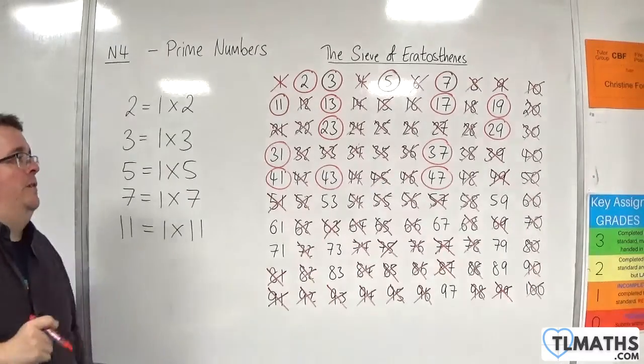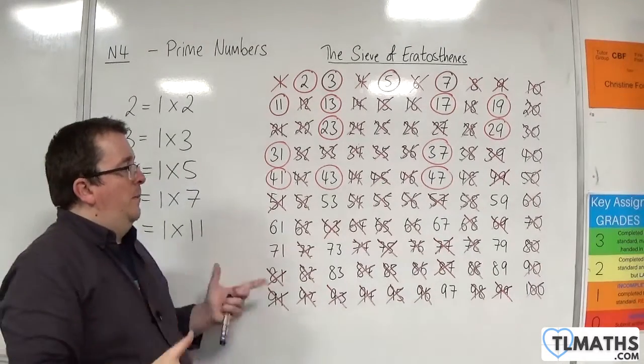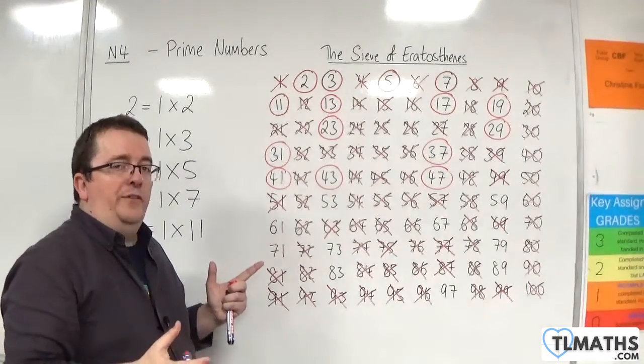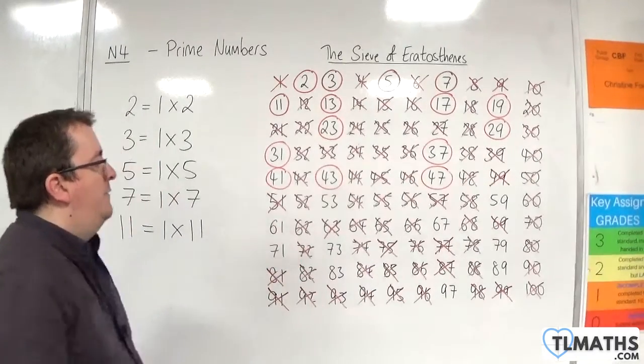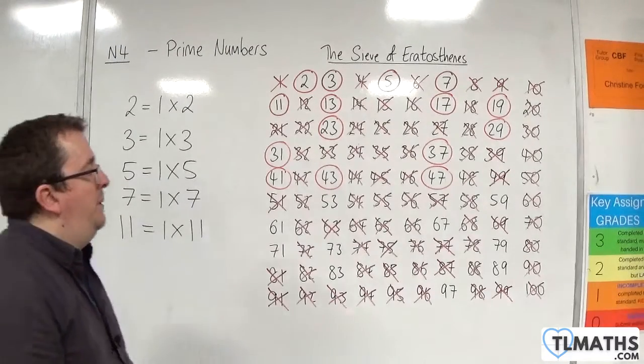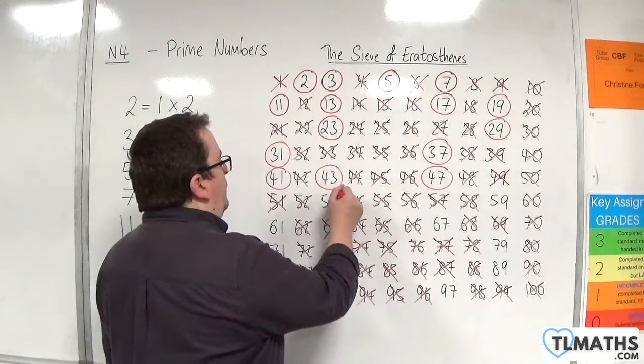And by the time we get to this point, when I double them past this point they will be beyond my list anyway. So anything that I haven't crossed off at this point must be prime.